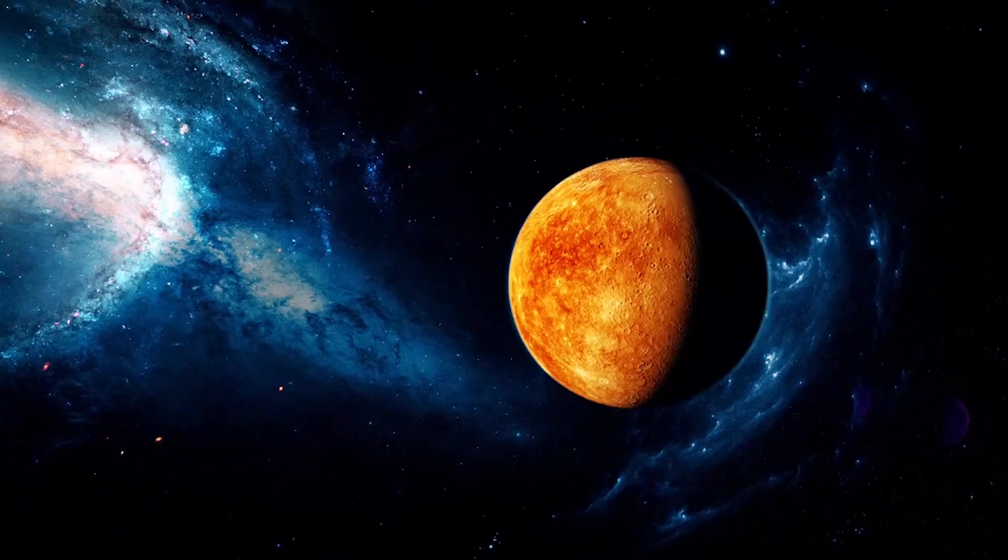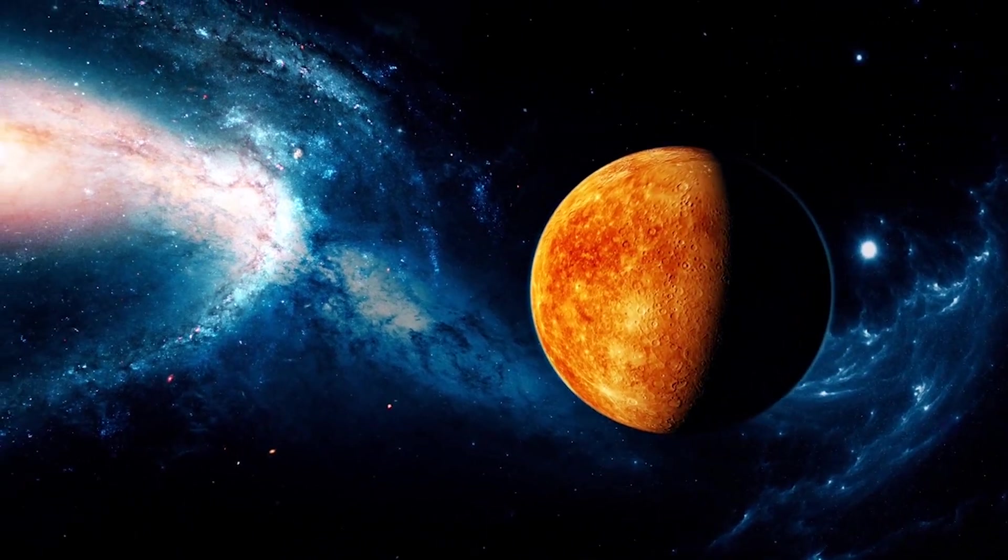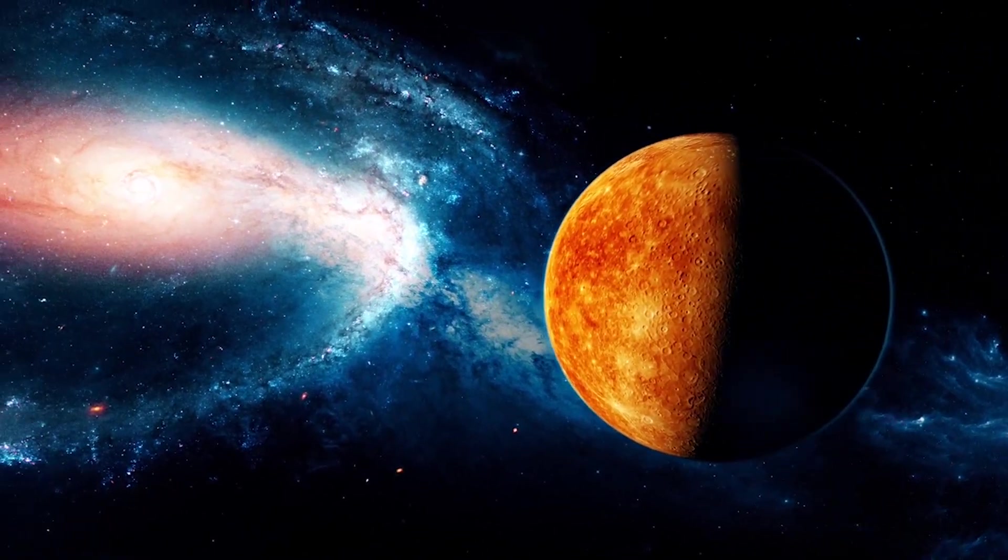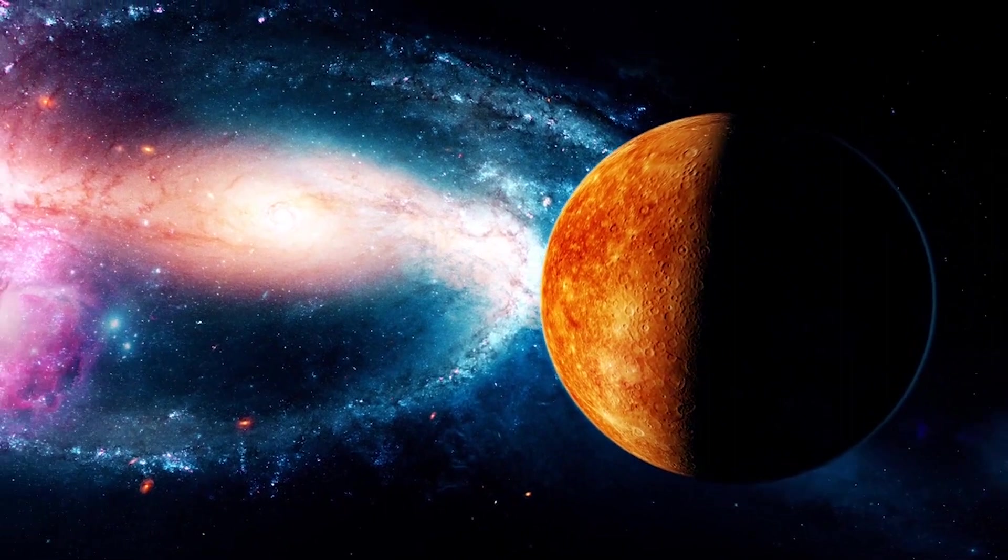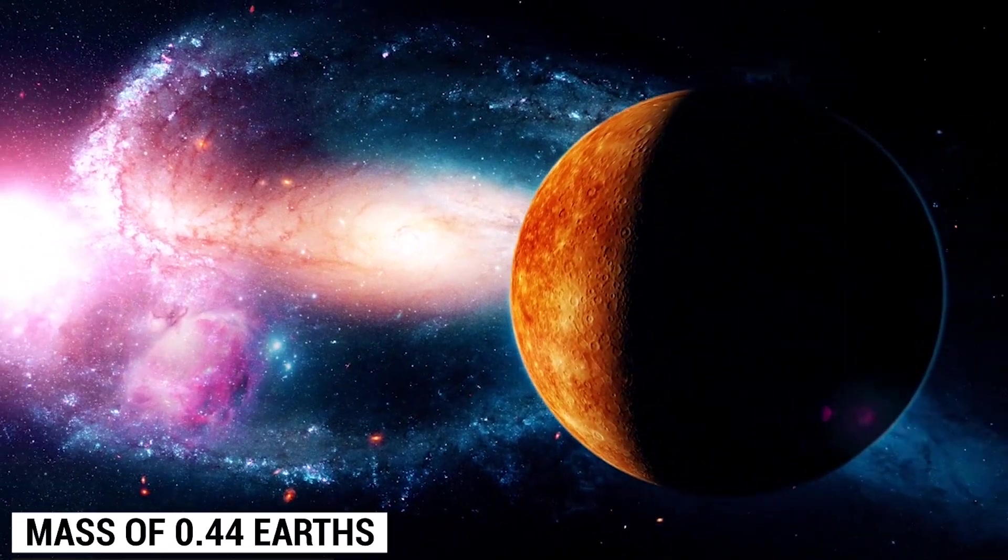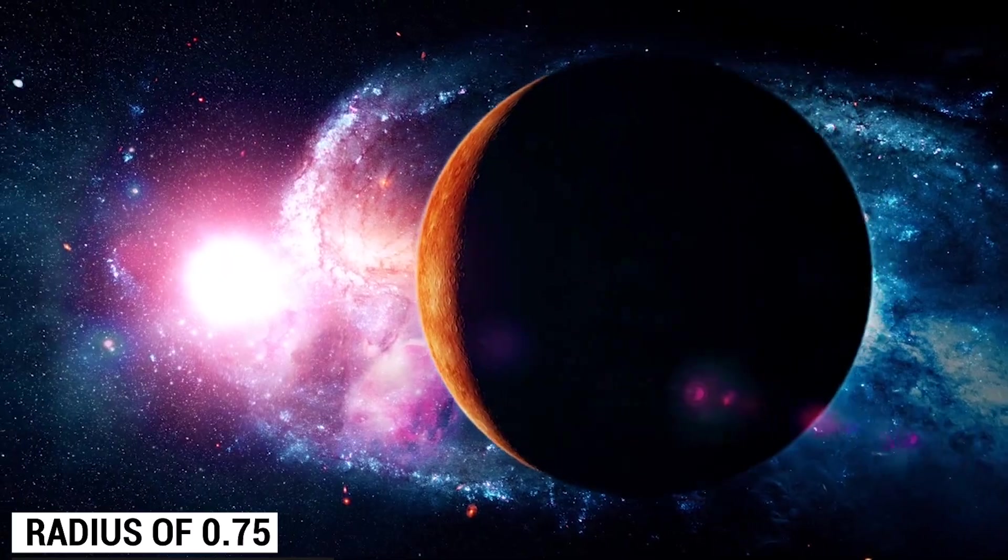Kepler-70b. Now, Kepler-70b is a 650-light-year-away burning planet. This exoplanet has a mass of 0.44 Earths and a radius of 0.75 times Earth.